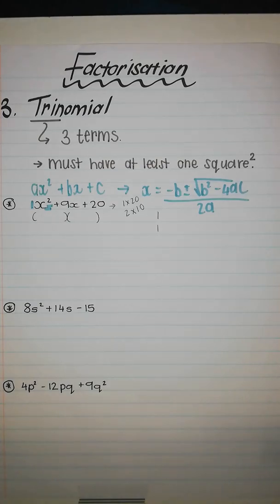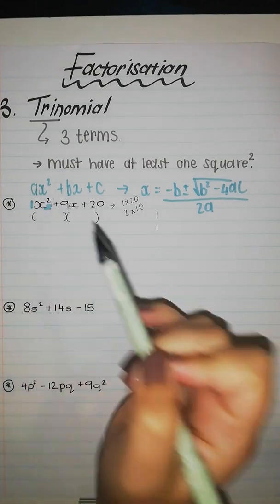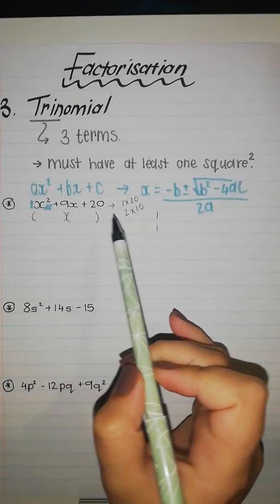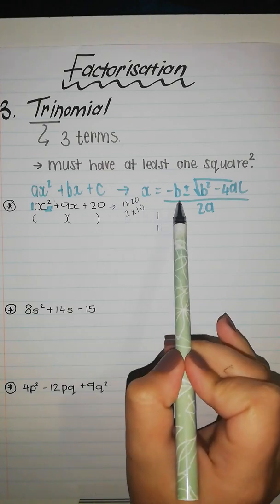Okay, factorization. So we already had our common factors number one, number two is our difference of two squares, and now trinomial. So in the name 'tri' it means three terms and it must have at least one square which we have over here.